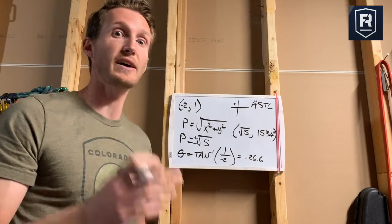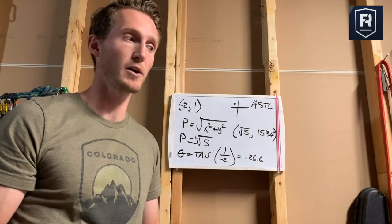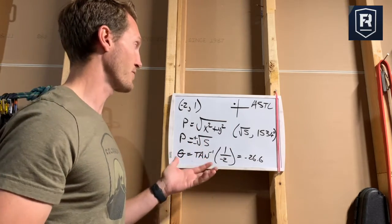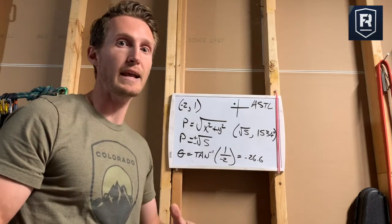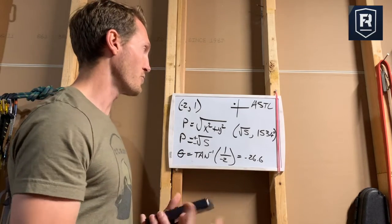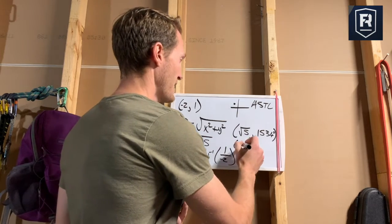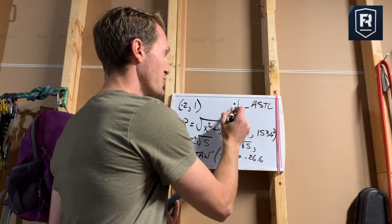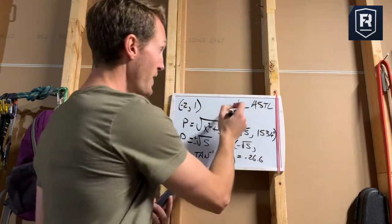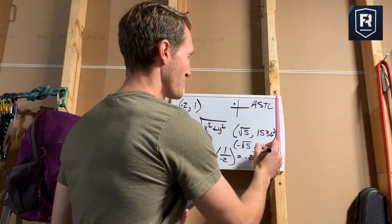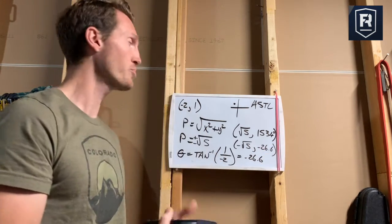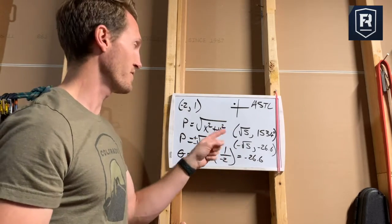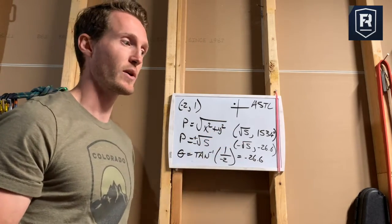Of course, there are other answers for this. A follow-up quiz question might say: find another answer for this exact same problem, but make sure θ is negative. That's relatively easy to do. You could say (-√5, -26.6°) — negative √5 points in the opposite direction, so rotating by that same negative 26.6° lands you at the exact same spot. Those two points represent the exact same location; they just have different names, and that would fit the conditions of the next question.